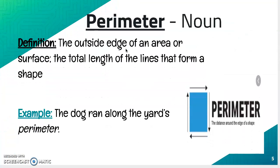Your next word: perimeter. It's a noun. The definition is the outside edge of an area or surface — the total length of the lines that form a shape. Example: The dog ran along the yard's perimeter.